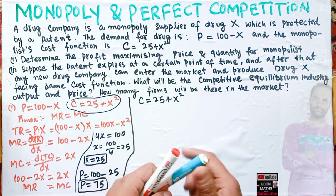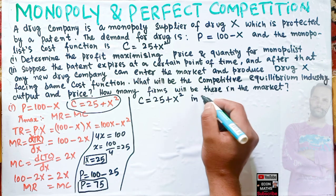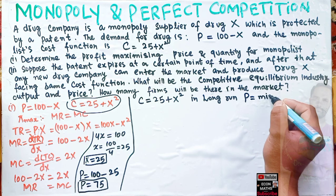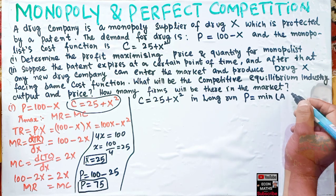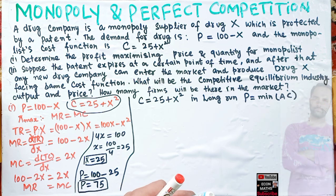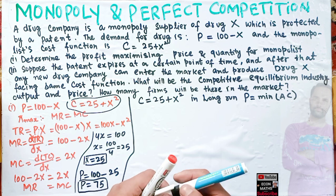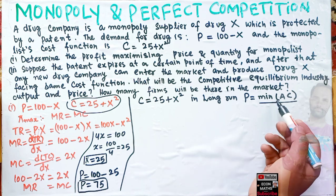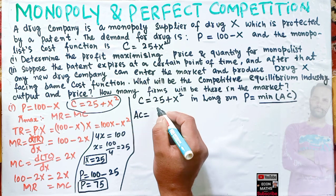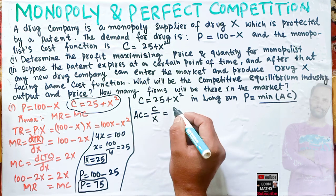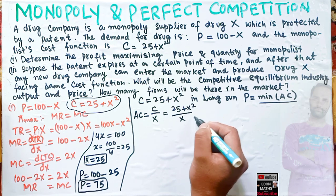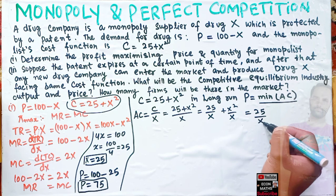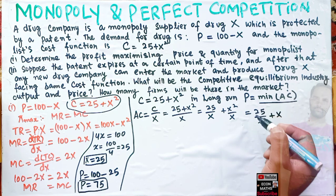The cost of each firm is c = 25 + x². In the long run, in a perfectly competitive market, price should equal the minimum of average cost. Average cost is total cost divided by output: AC = (25 + x²)/x = 25/x + x.